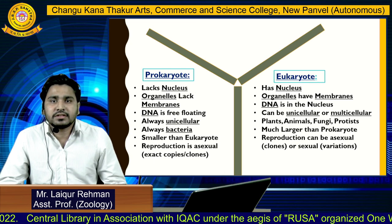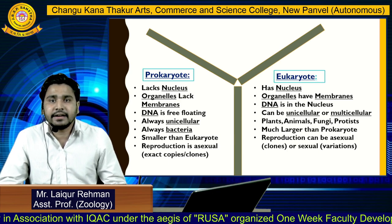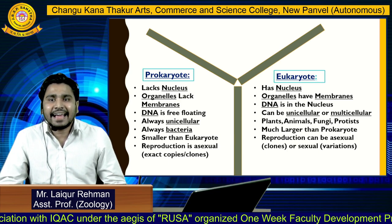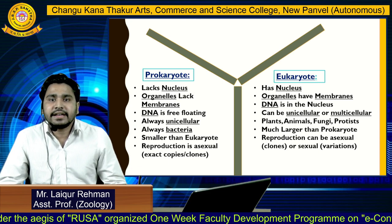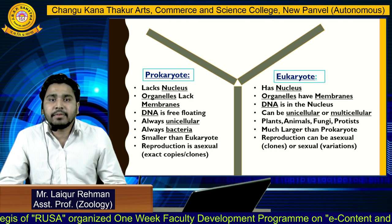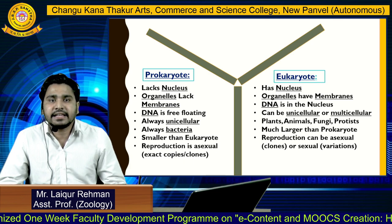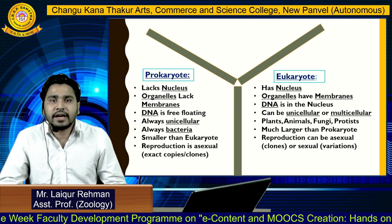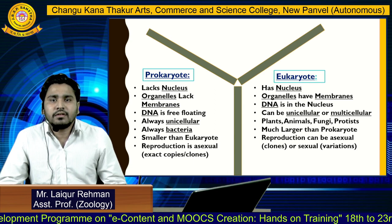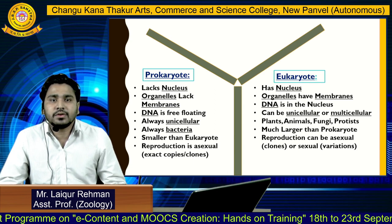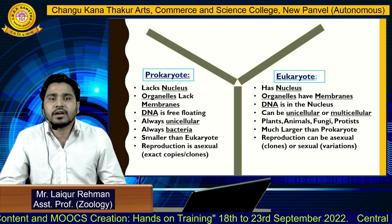Now we'll see the differentiation of prokaryotes and eukaryotes. In prokaryotes they lack a nucleus, but eukaryotes have a nucleus. Prokaryotic organelles lack membranes, but in eukaryotes organelles have membranes. In prokaryotes DNA is free-floating, while in eukaryotes DNA is contained within the nucleus. Prokaryotes are always unicellular; eukaryotes can be unicellular or multicellular.